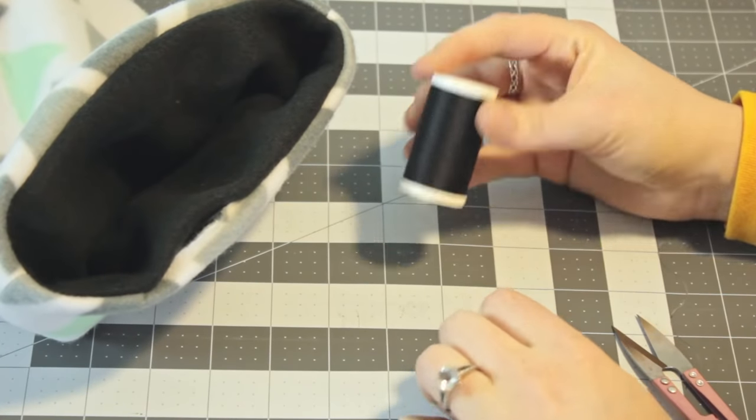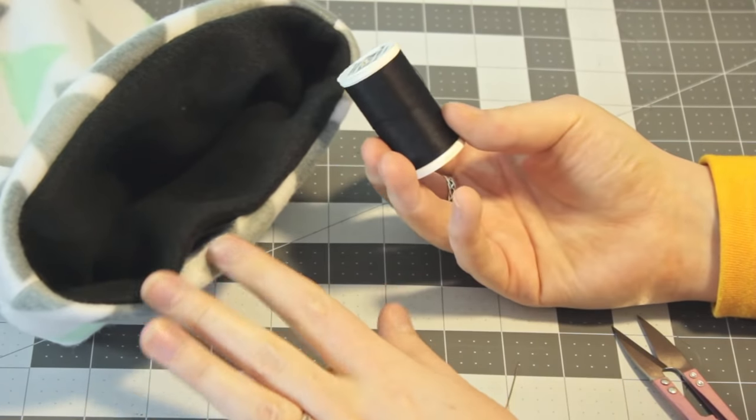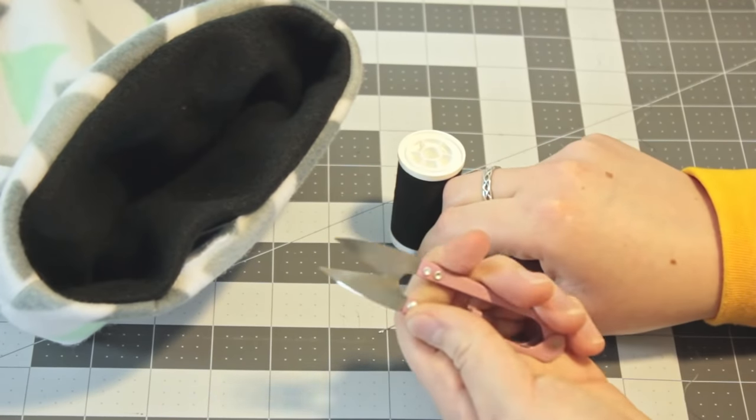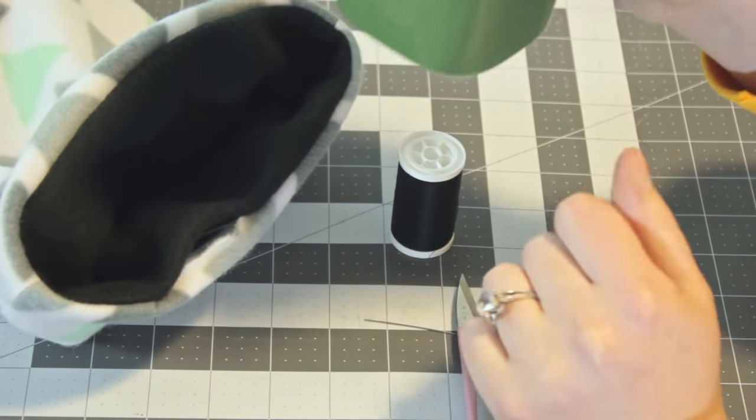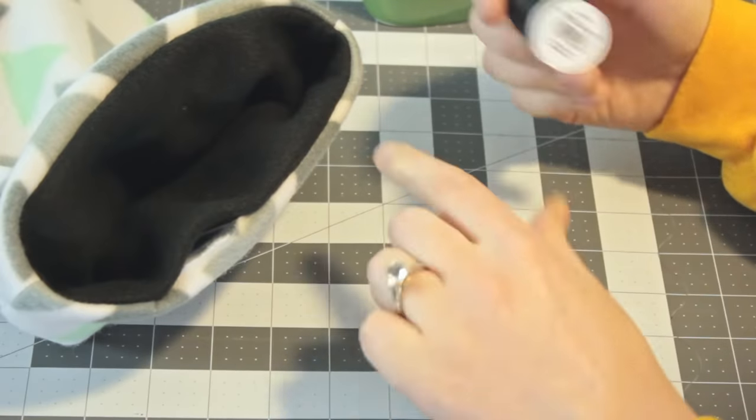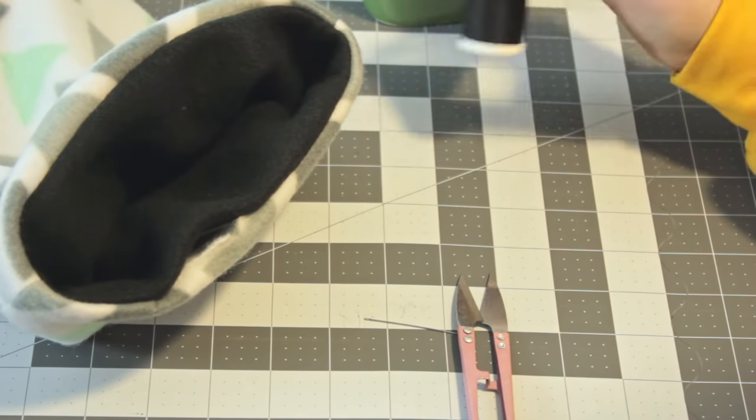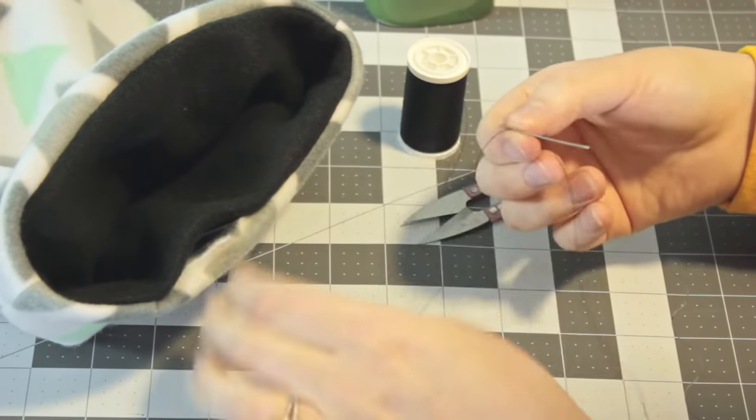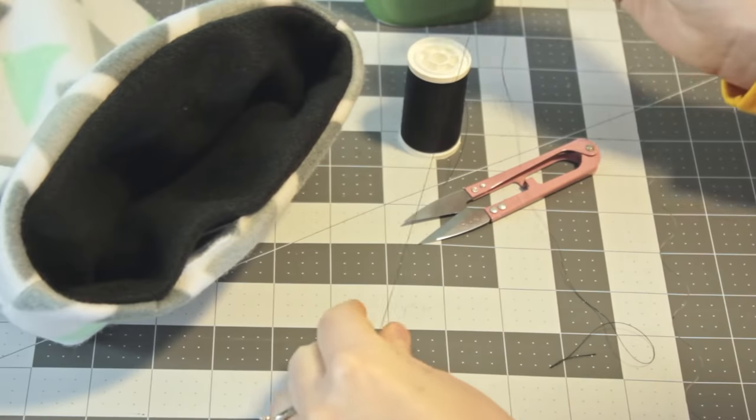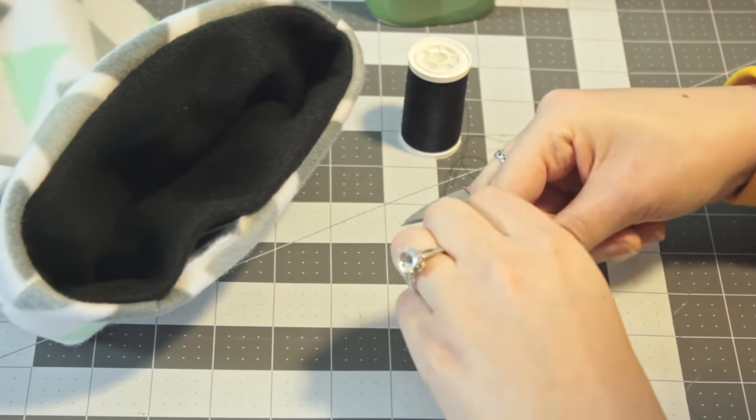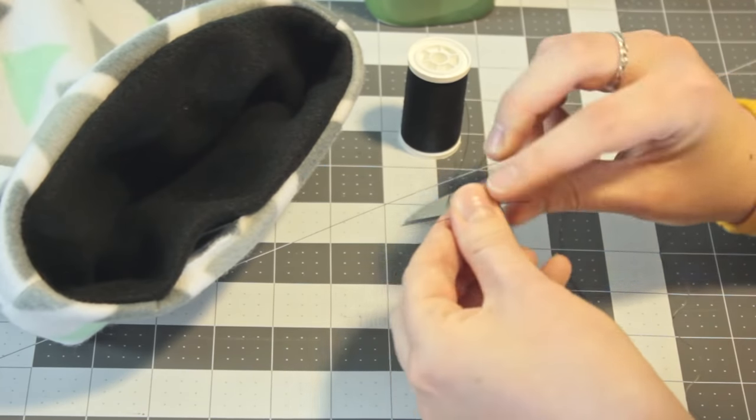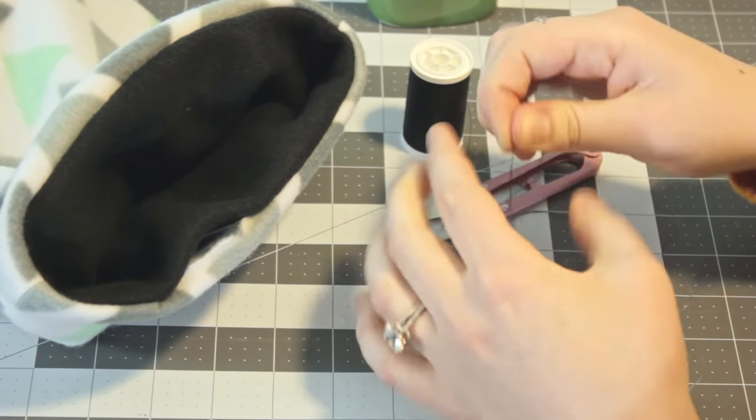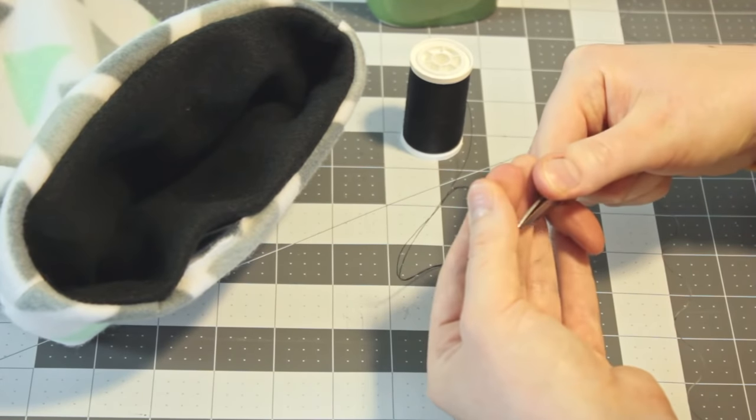To do an invisible stitch, you're going to need thread. I like to use a matching thread because then it's extra invisible. You're going to need a hand sewing needle, and you're going to need scissors or snips of some kind, and you're also going to need your drink. Don't forget this, it's the most important. You're not going to need a ton of thread, so I'm going to pull off like a foot and a half or so. Then I'm going to thread my needle, and I'm going to pull the thread down until it meets the other end. Then I'm just going to tie a knot in my thread, and I'm going to snip off the excess.